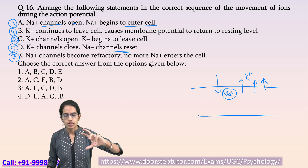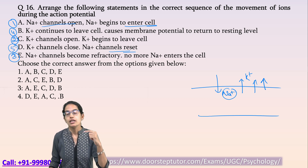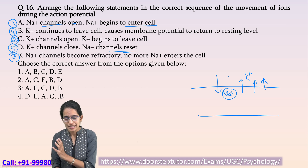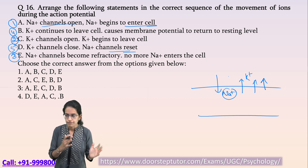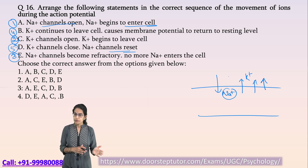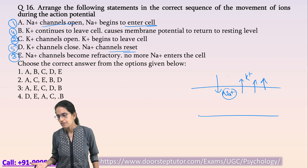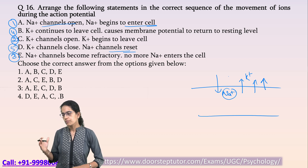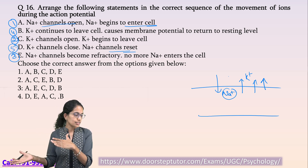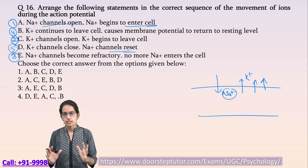This action potential in a neural or nerve fiber is an extremely important topic. Some variation of this question is asked every time — it could relate to membrane potential, which channel opens first or later, what the refractory period is, how it contributes to the decreasing phase, and the potential's increasing and decreasing phases. These are some of the most common questions asked in this section.